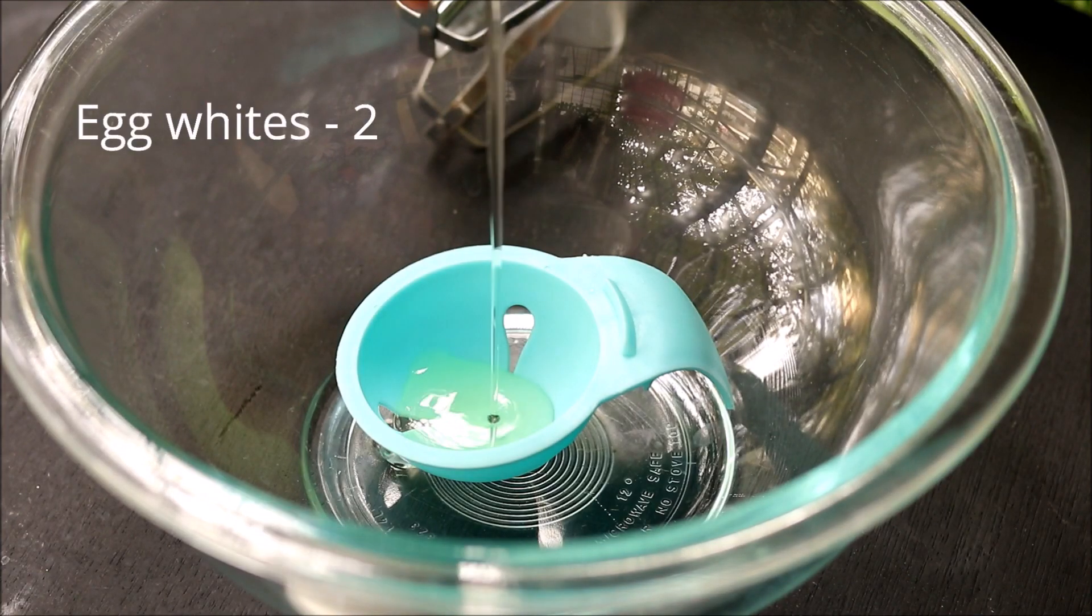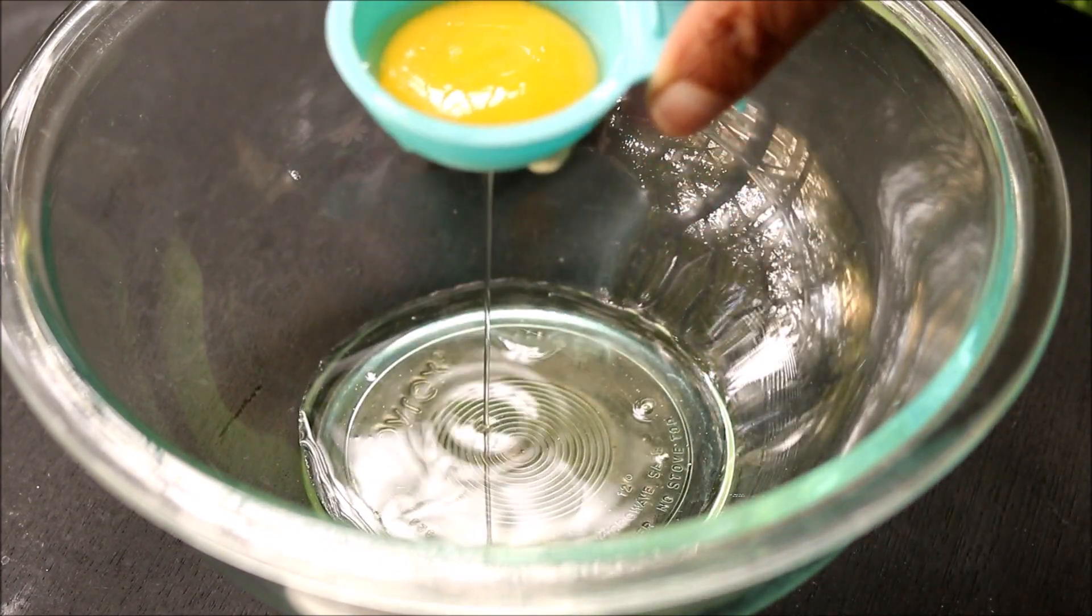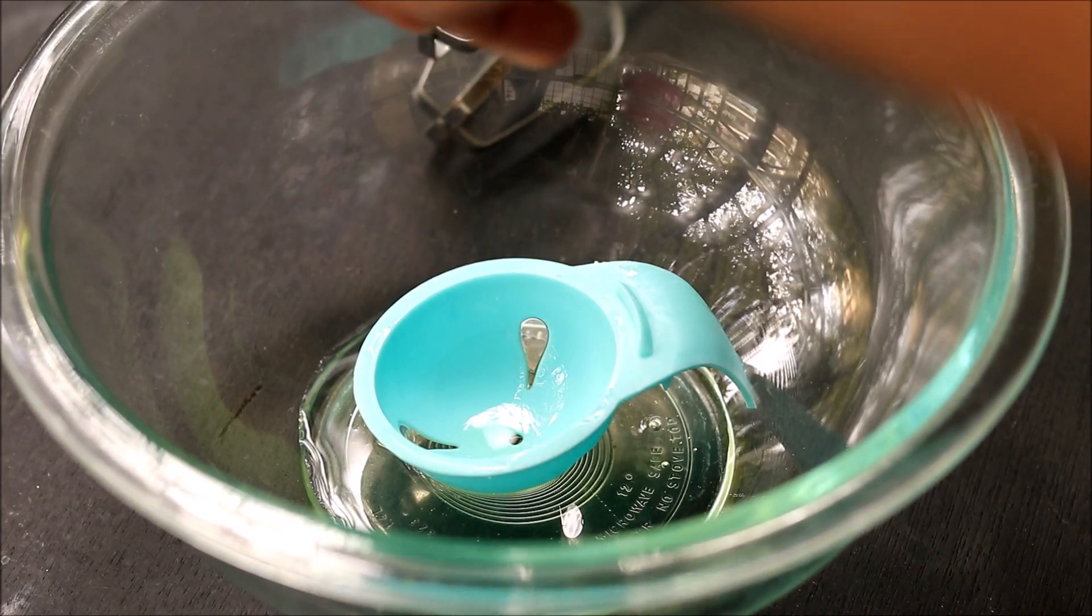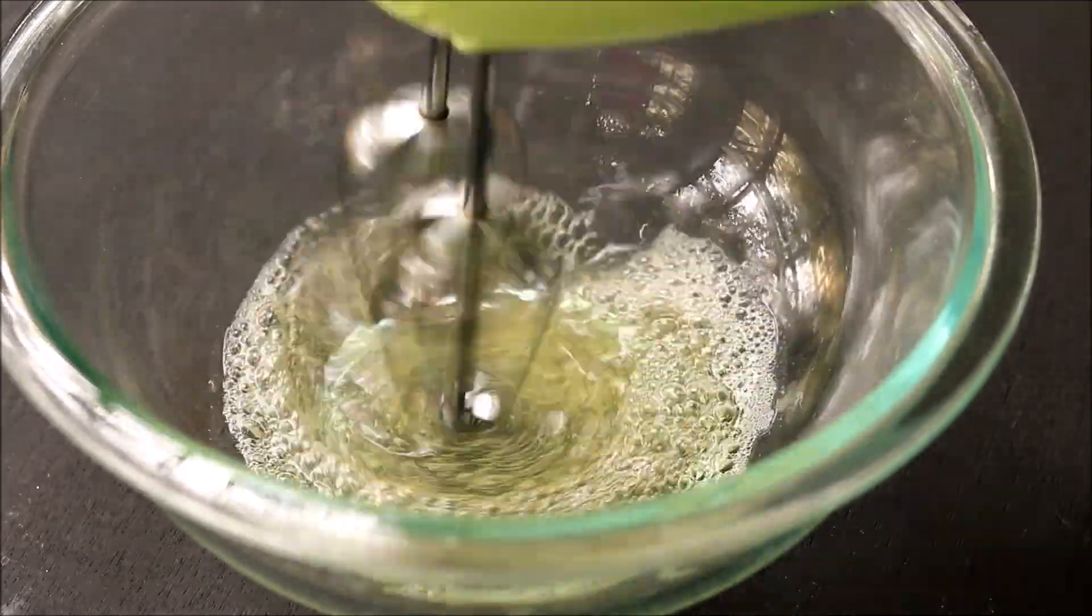First ingredient is egg whites. Take two egg whites in a large bowl. Now using a hand mixer, blend it really well.